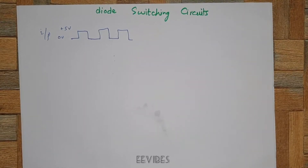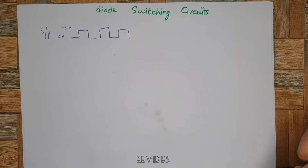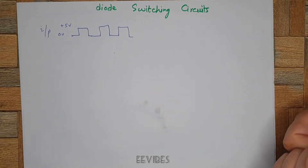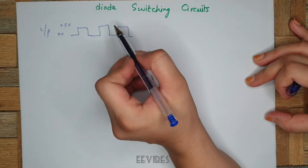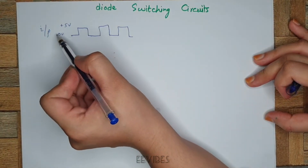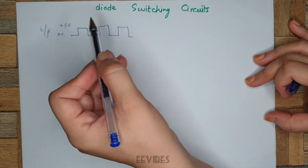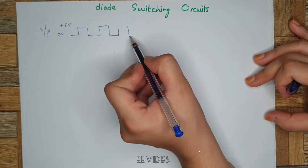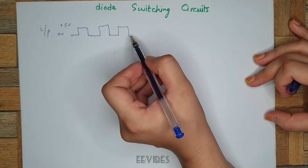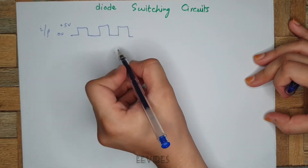Hi guys, assalamu alaikum, this is your instructor Asma Mishtag from the Double E Vibes. In today's lecture I am going to explain what are the diode switching circuits. Basically, diode switching circuits are the circuits that have an input in the form of a pulsating square waveform, where zero voltage refers to the off state and plus five volts refers to the on state. In such types of circuits we perform the switching of different devices through the diodes.